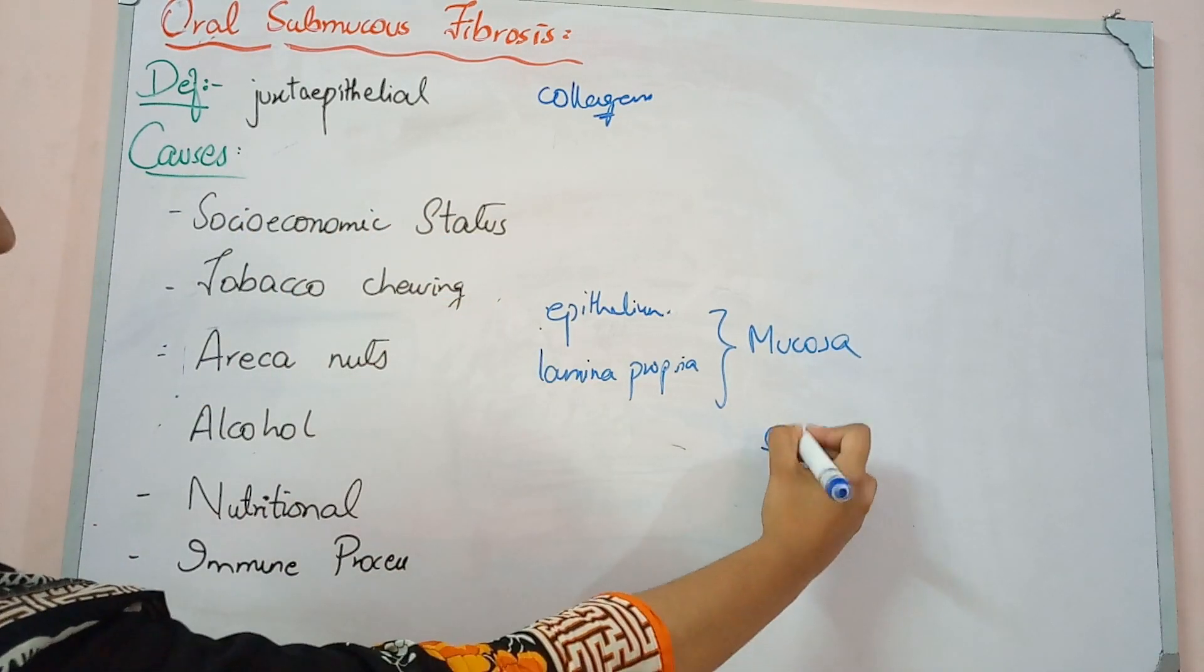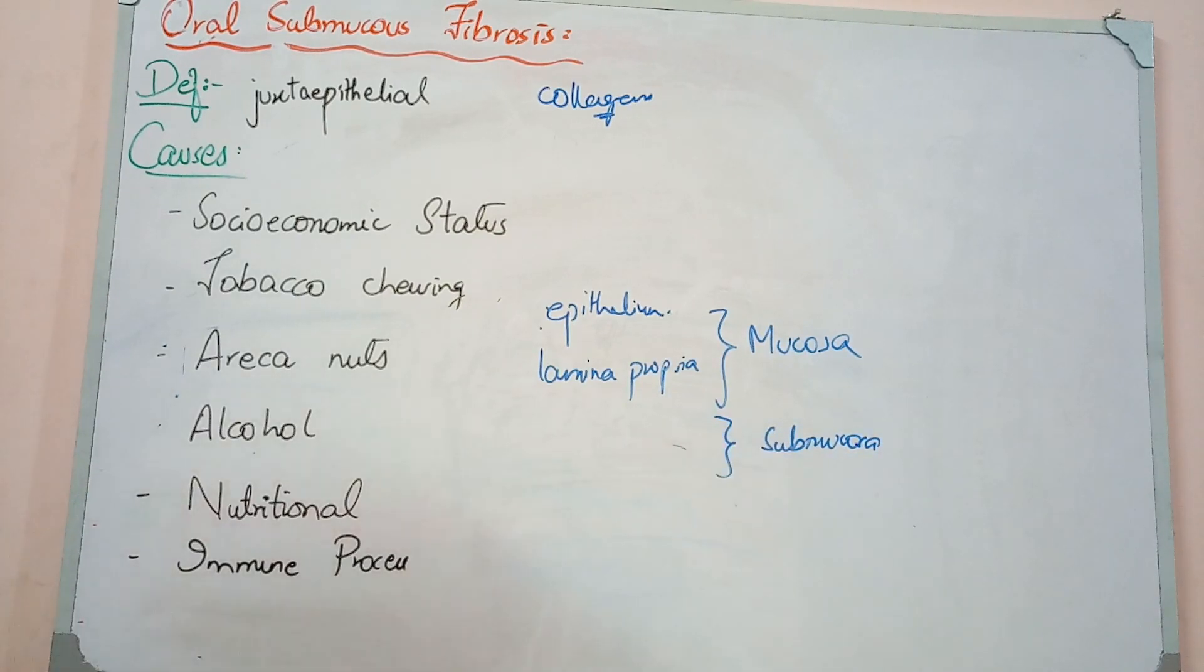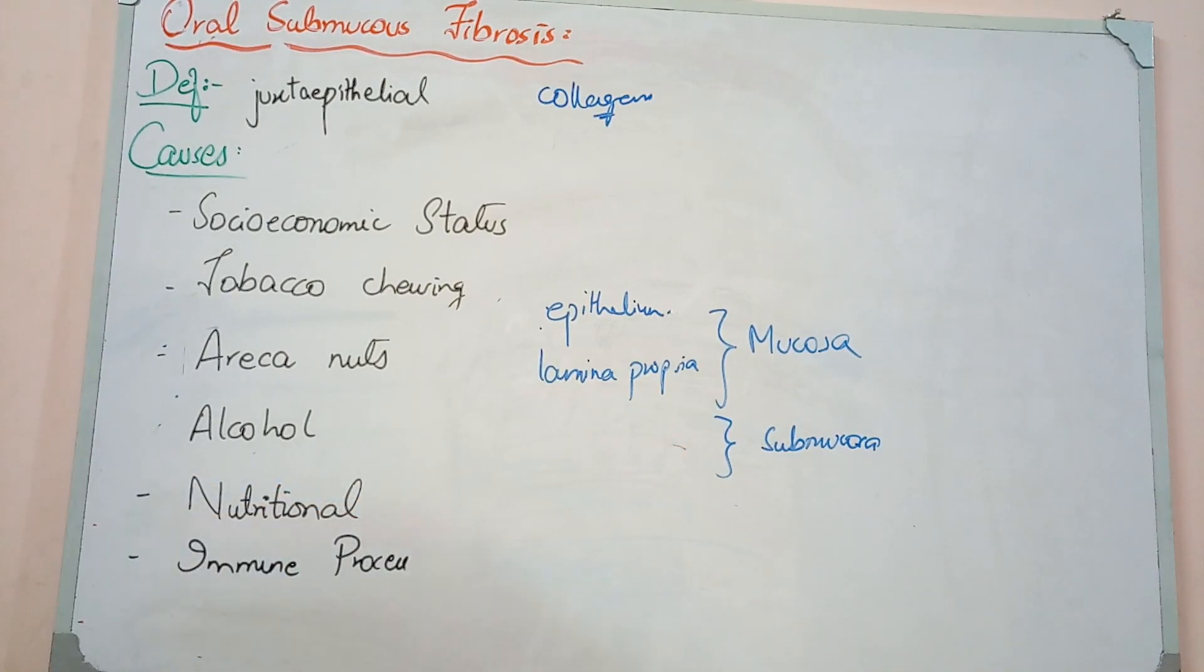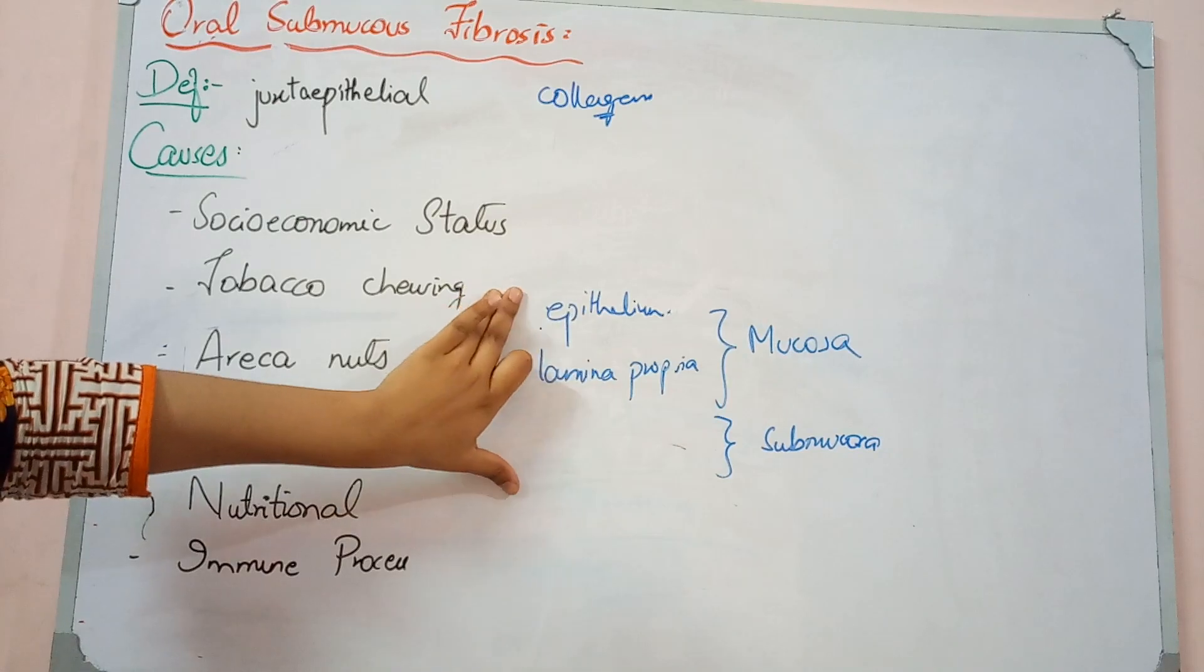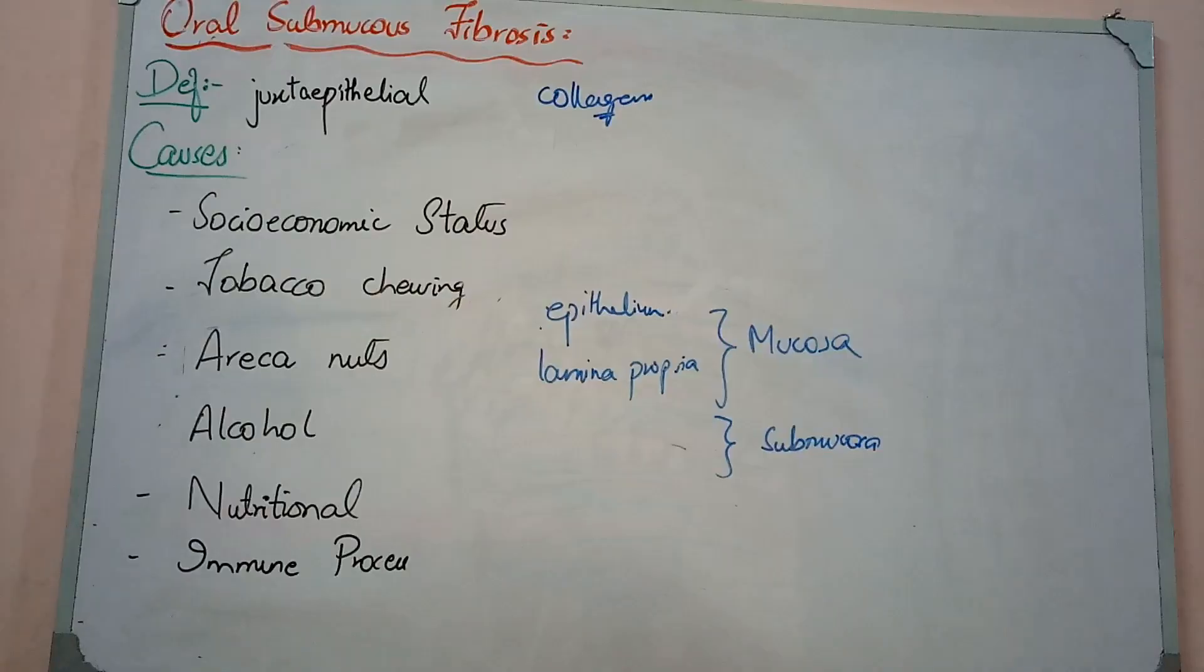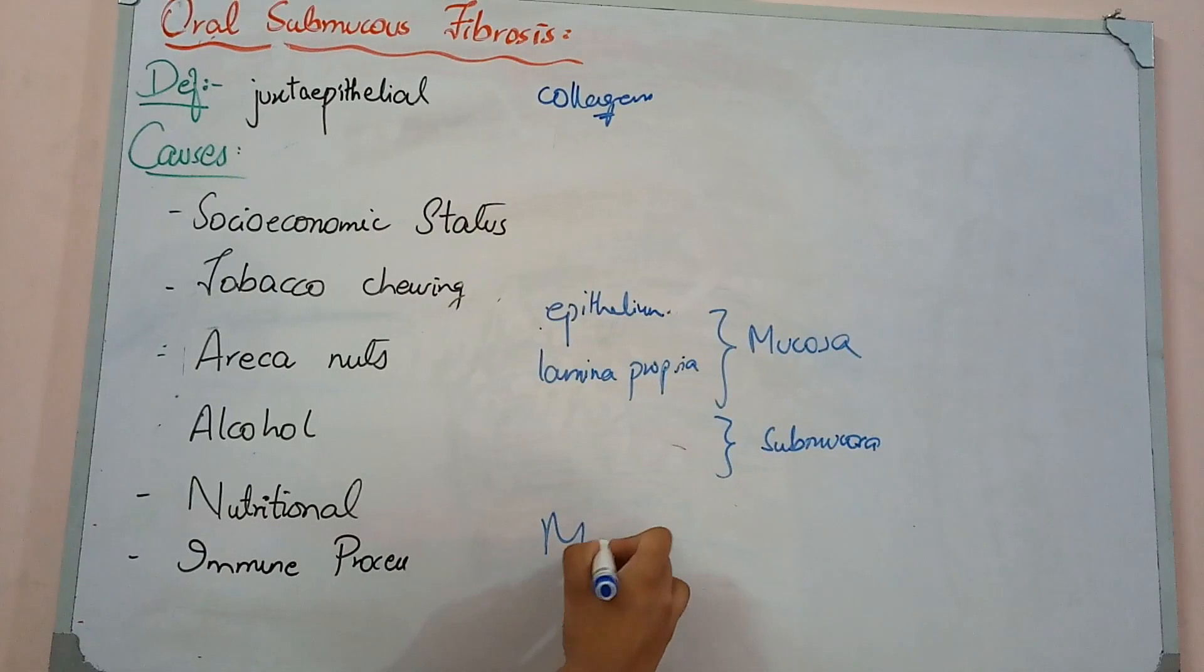After the mucosa, we have the submucous layer, also connective tissue with fibers, extracellular matrix, and blood vessels. If there are muscles in the oral cavity, we have muscle layers. Further down the GIT, we have muscularis layer and then external layer. This is the histological picture.